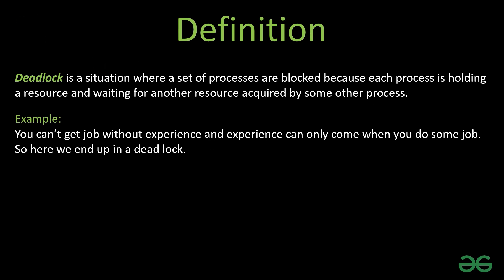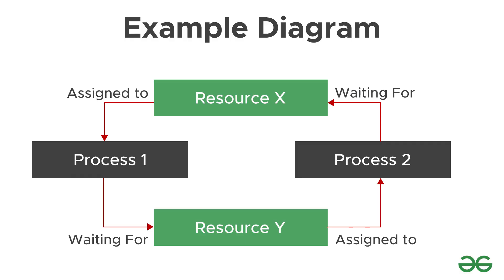Let us understand it with the help of an example. Process 1 is waiting for resource Y, but it is assigned to process 2. Process 2 is not getting completed because it requires resource X, which is assigned to process 1, ending up in a deadlock situation.